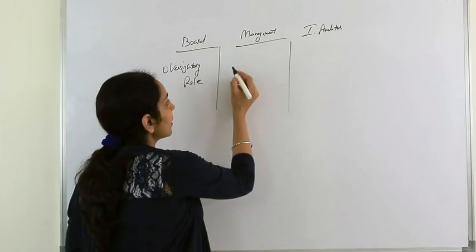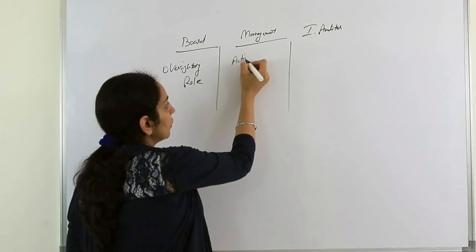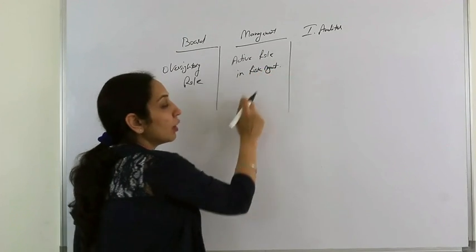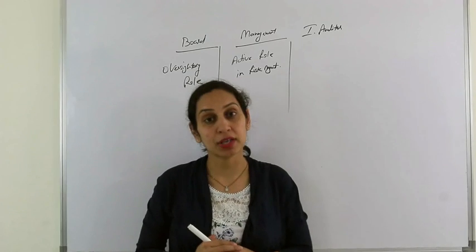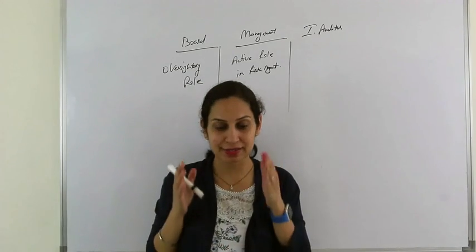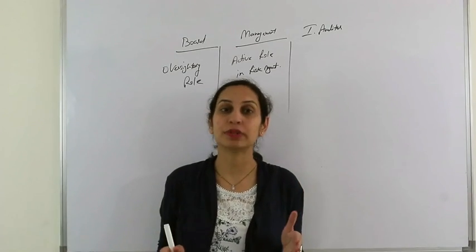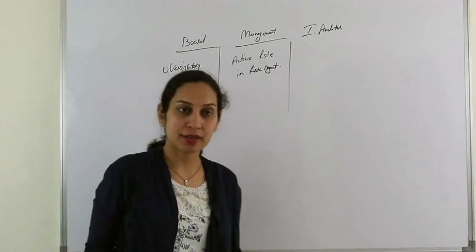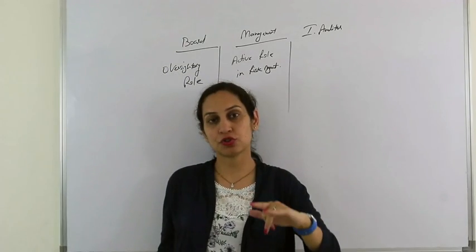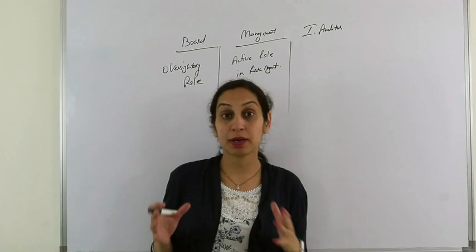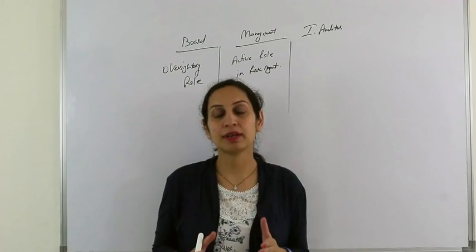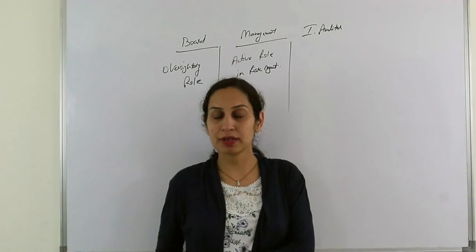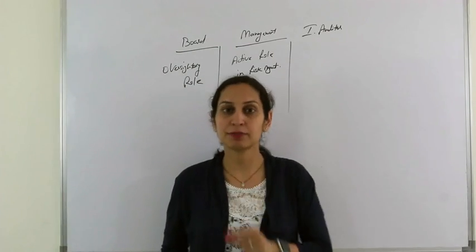Management has an active role in risk management. They are the ones who will actually manage the risk, making sure risk management exists and works efficiently and smoothly. If it fails — say control risk or detection risk arises — they are the ones to be held accountable. Management ensures that the steps decided by the Board are followed and work smoothly so the company can make better decisions and improve efficiency.